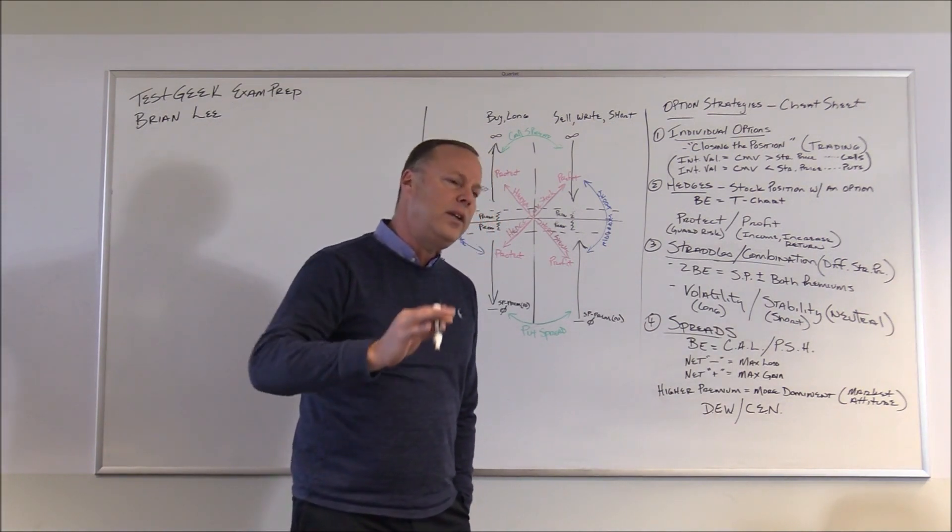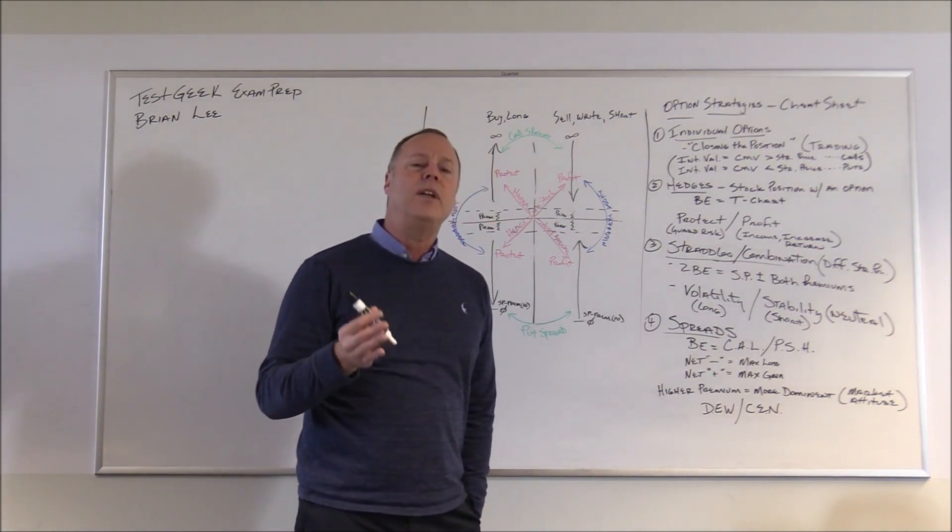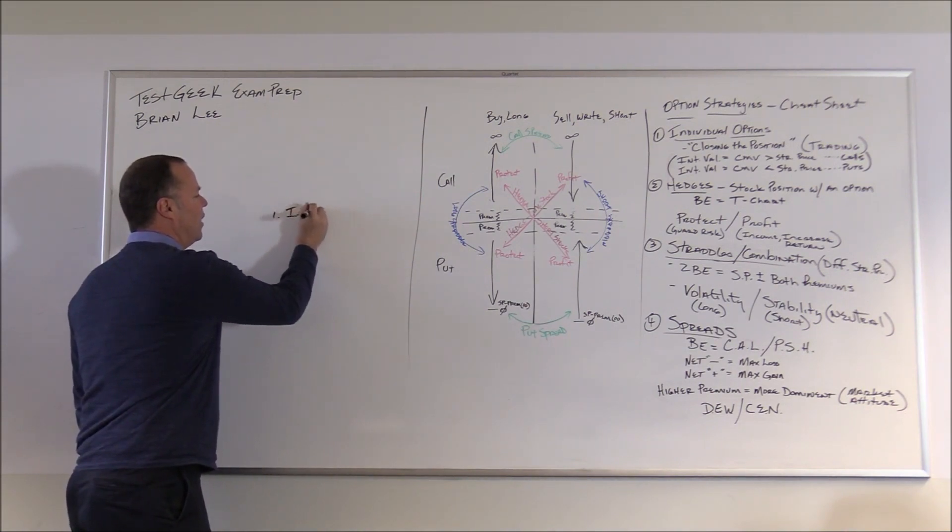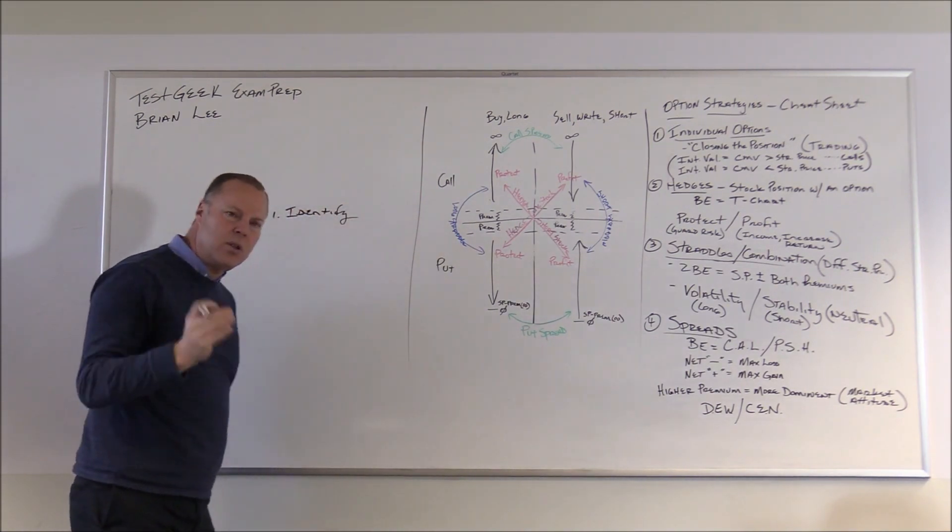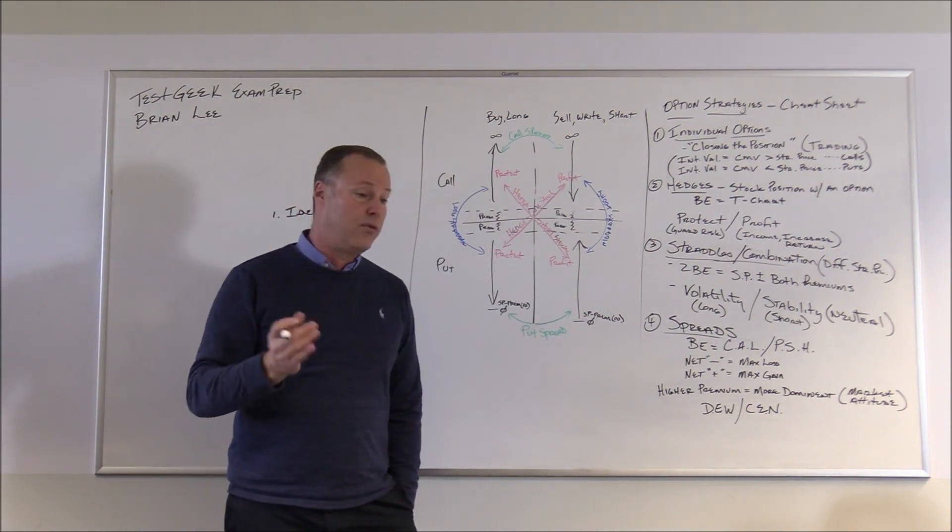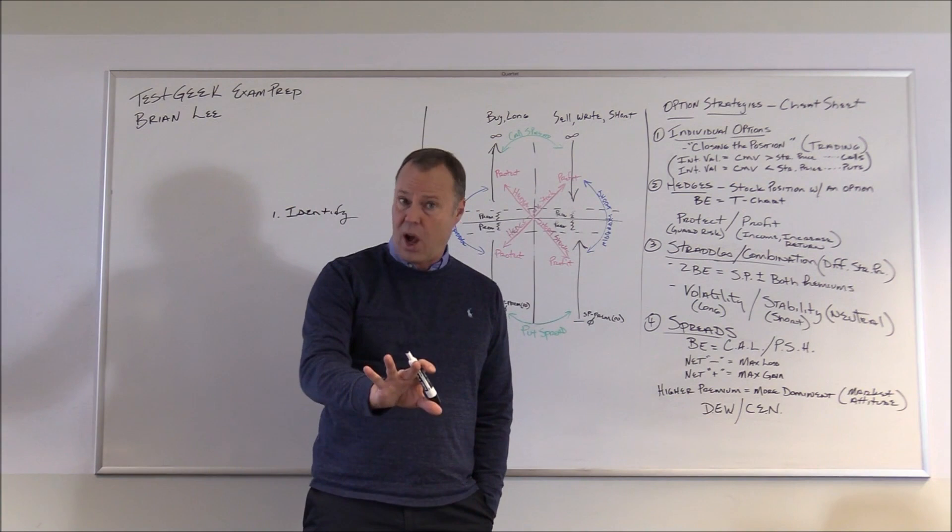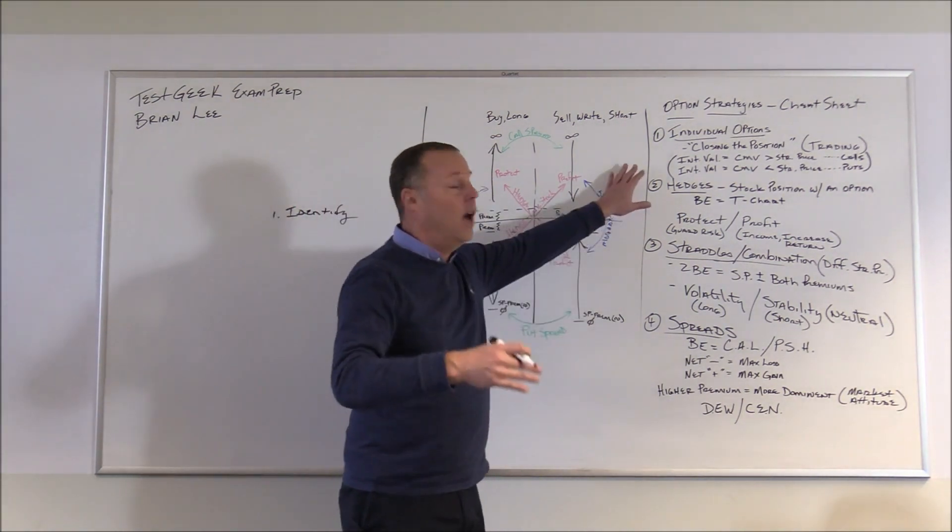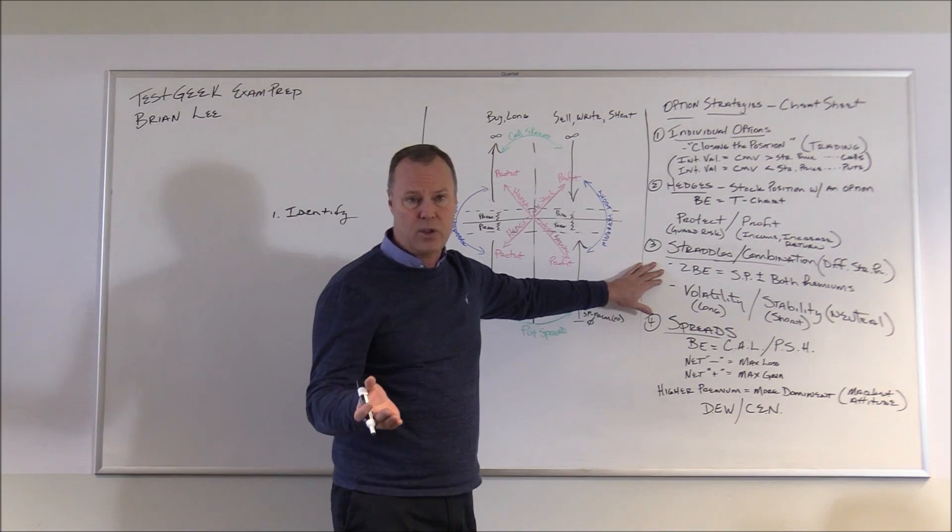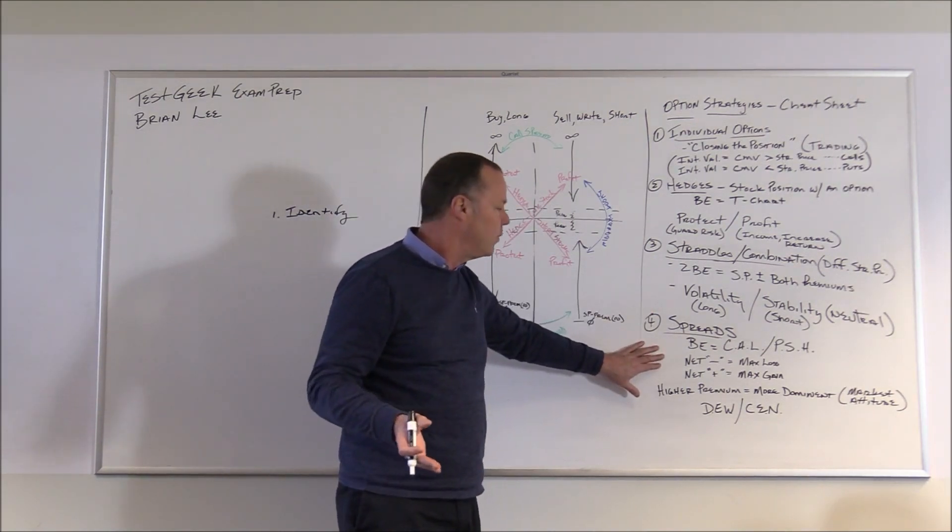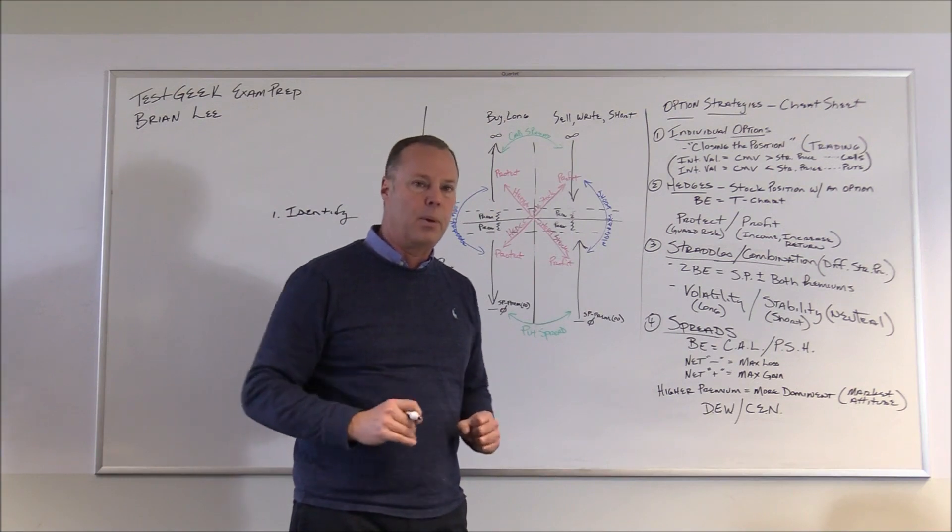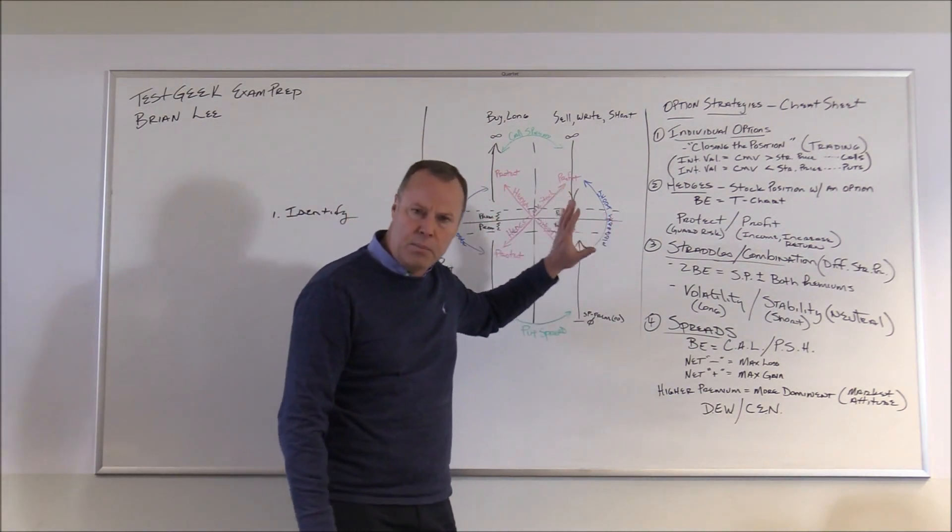These are frequently asked questions from folks who are studying for their Series 7 over the years. One of the first things you have to do is identify what type of option strategy it is. Most of the option questions you see can actually be divided into four different option strategies: individual options, hedges, straddles or combinations, and spreads. There's a fifth type, the non-equity options, but these are predominantly the most that you're going to see on the exam.